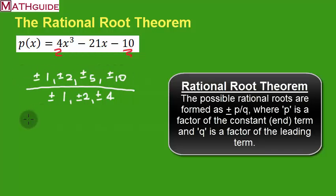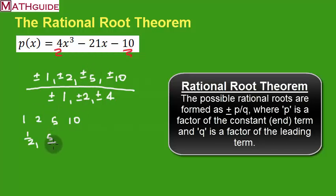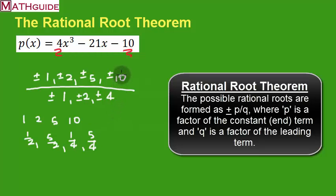If I divide all of these by 1, I get 1, 2, 5, 10. If I divide them all by 2, I get 1 divided by 2 — that's a half. 2 divided by 2 is 1, already listed. 5 divided by 2 is 5 halves. 10 divided by 2 is 5, already listed. Now let's divide them all by 4: 1 divided by 4 is a fourth. 2 divided by 4 is a half, already listed. 5 divided by 4 — let's list that one. And 10 divided by 4 is 5 halves, already listed.